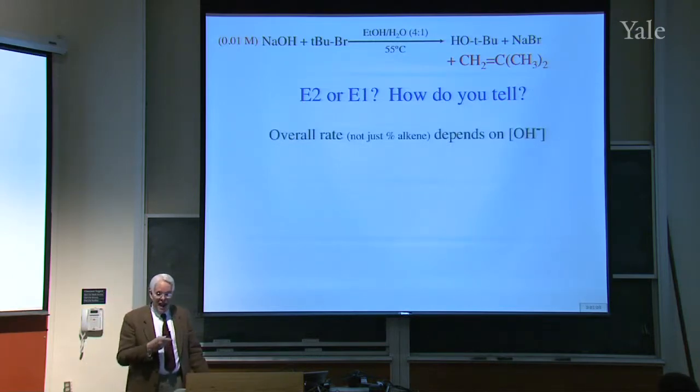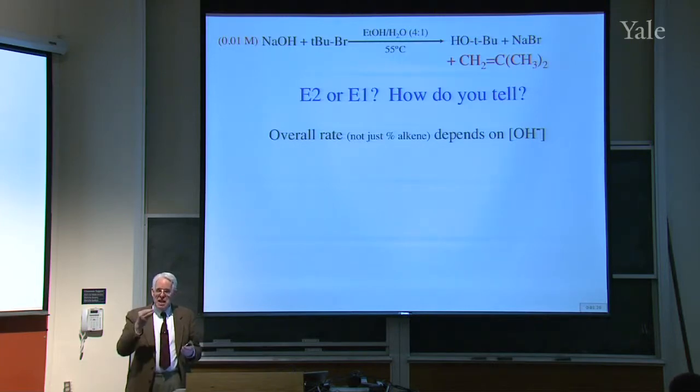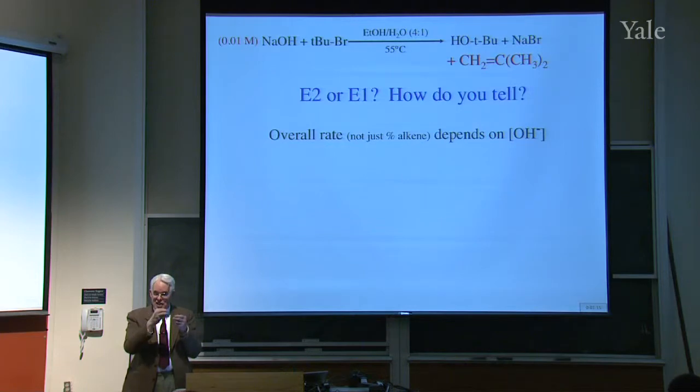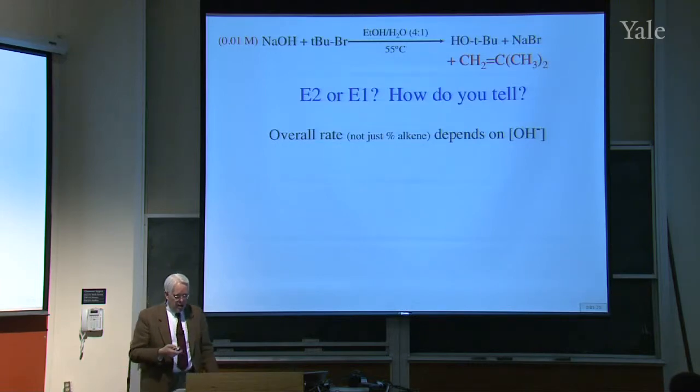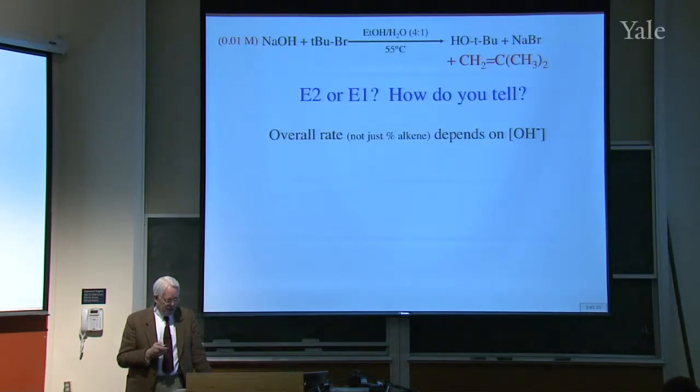You can look at the overall rate, not just the percent of alkene, because more hydroxide could mean even though you've made the cation, the more hydroxide the more hydrogens you pull off compared to water attacking. So if you see the rate, not just the product ratio, but the rate depends on hydroxide, then it's E2.